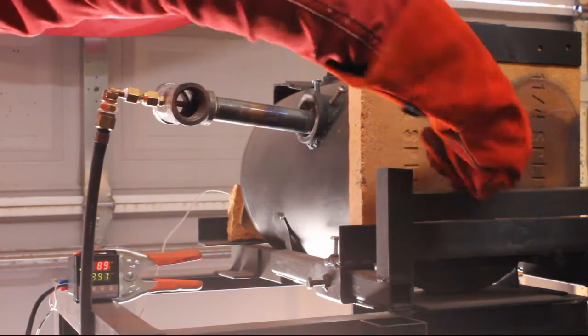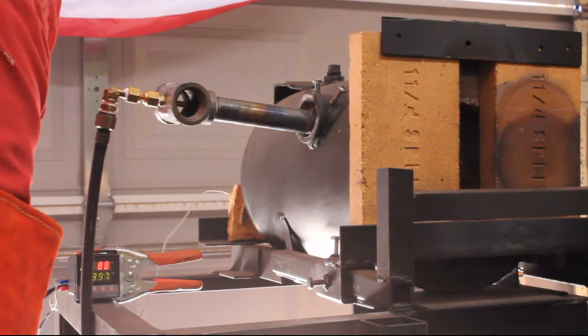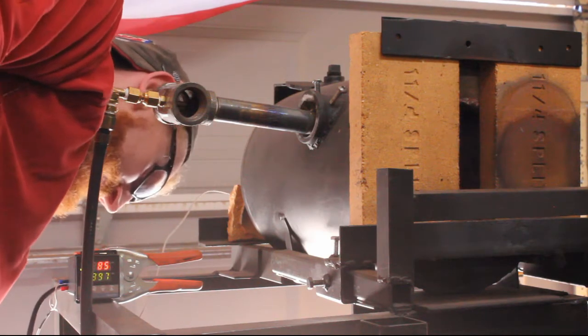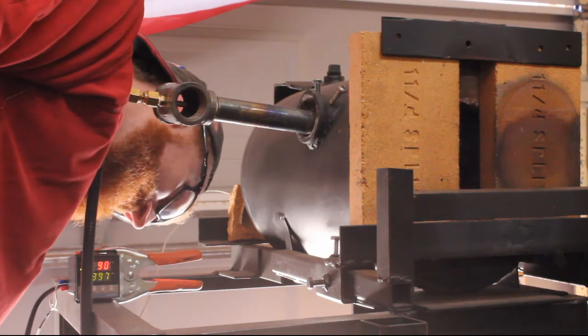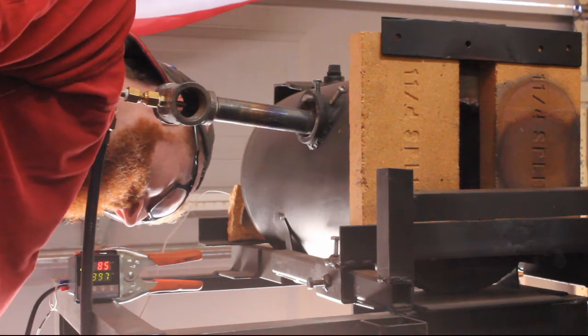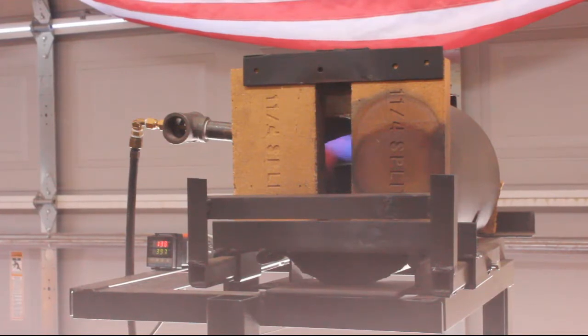So I started up the forge with my small venturi burner. There is a link to the top right of your screen if you want to build a burner just like this. And you can see me here, I'm looking at the propane regulator, and I got it to 4 psi. That's normally a pretty low number for this burner, but I eventually got it down to 3 psi to run it as soft as I could.